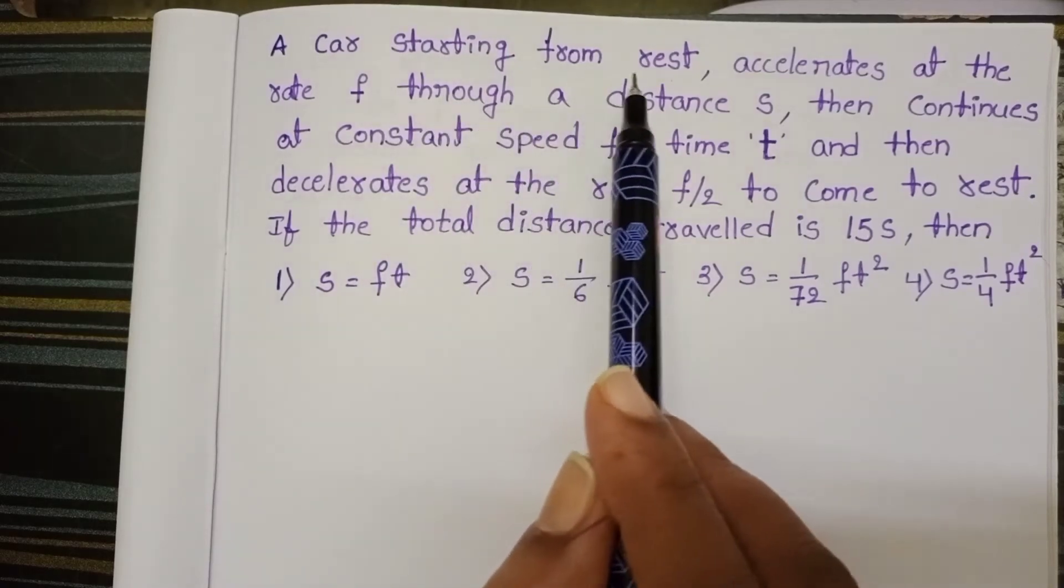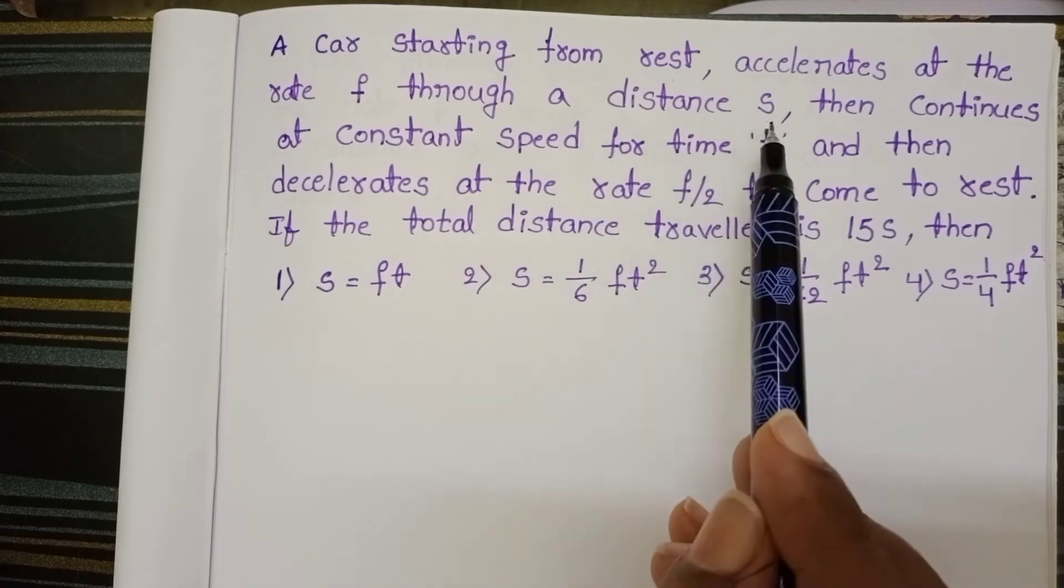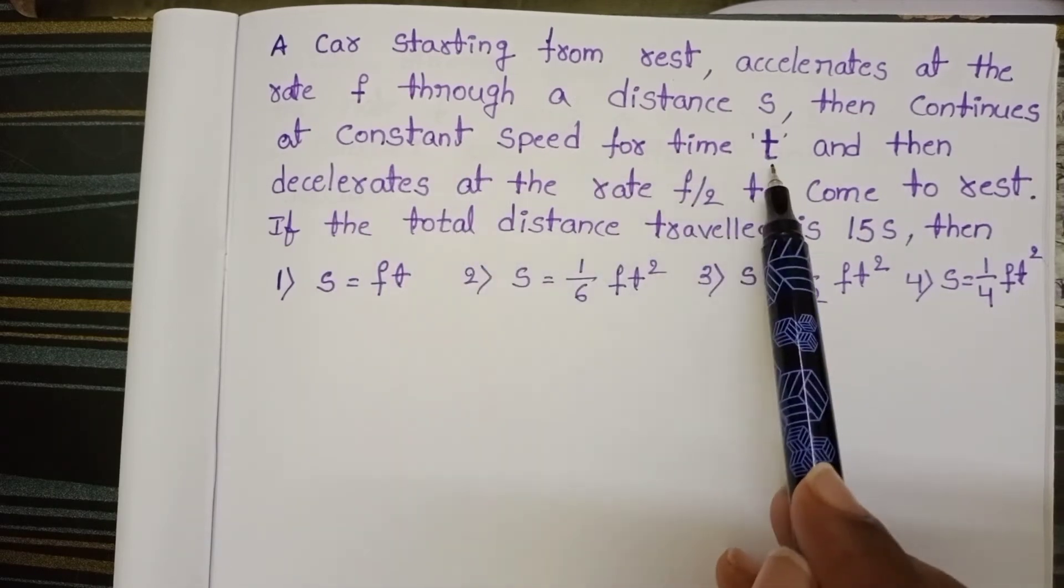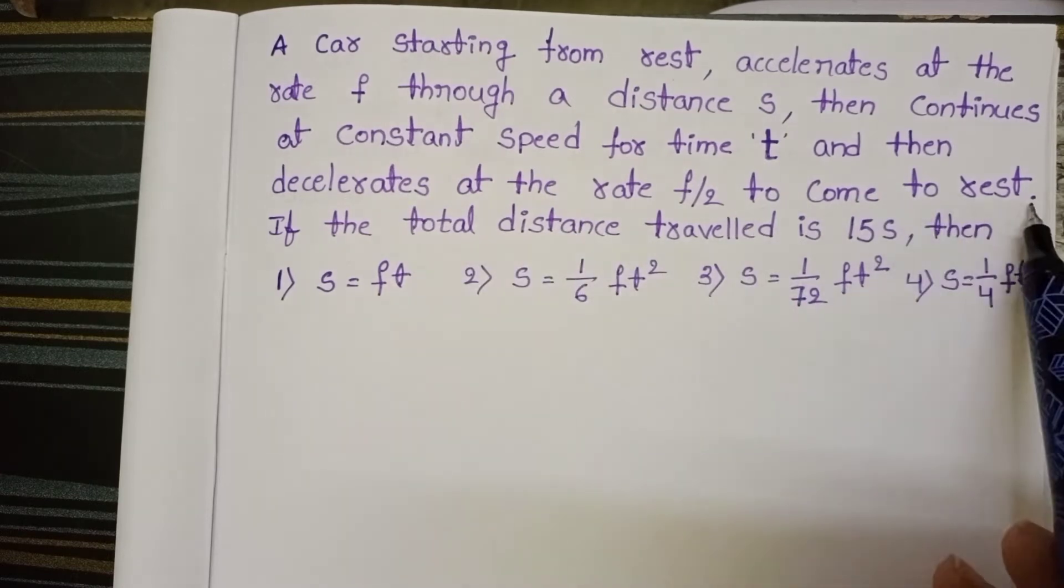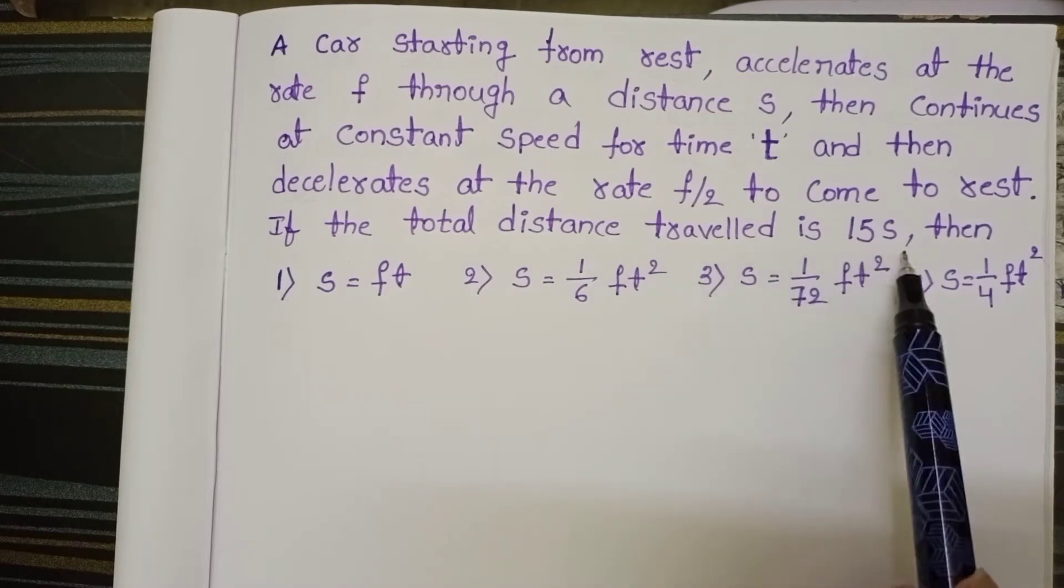A car starting from rest accelerates at the rate f through a distance s, then continues at constant speed for time t and then accelerates at the rate f/2 to come to rest. If the total distance travelled is 15s,